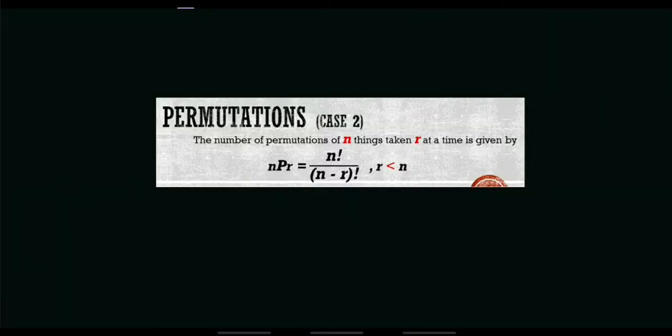Hi, good day everyone. This video is about permutations, case number 2. According to our previous discussion, we defined permutation as an arrangement of things or items in a definite or particular order. The number of permutations of n things taken r at a time is given by nPr equals n factorial divided by the quantity of n minus r factorial, wherein r is less than the value of n.